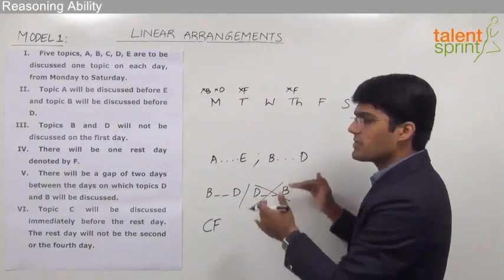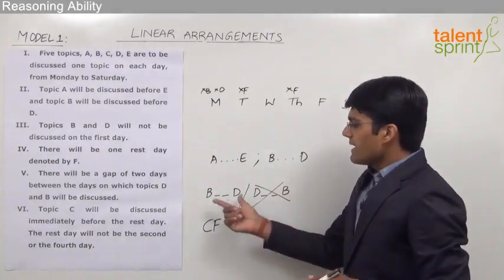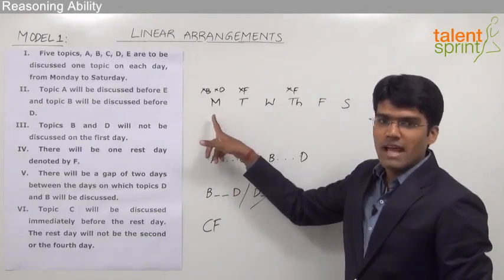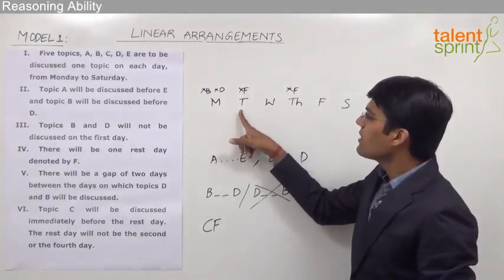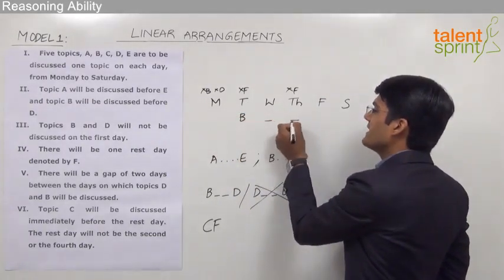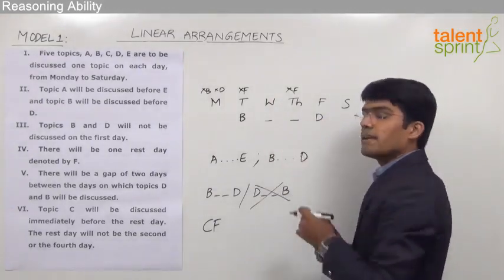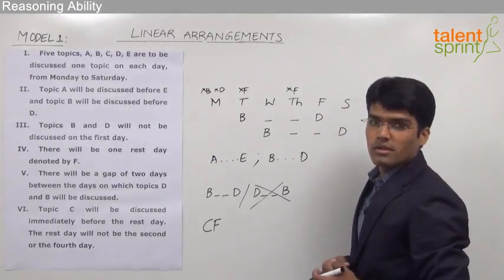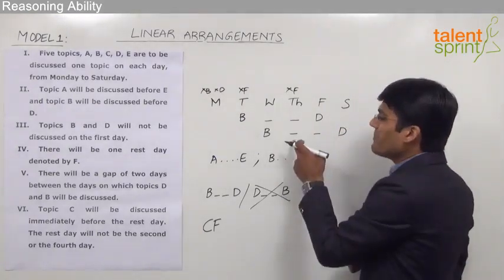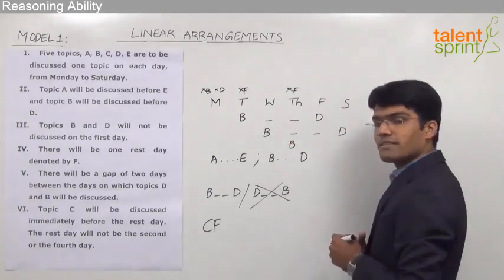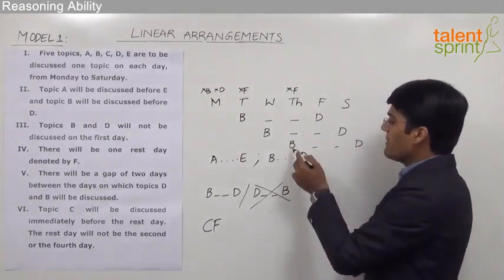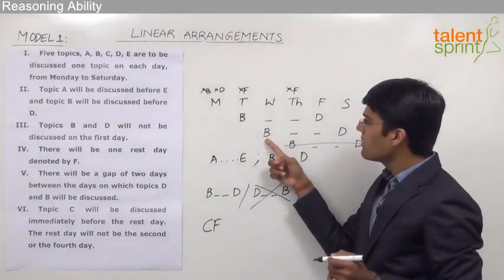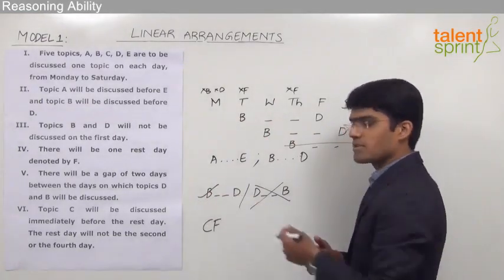Let us start solving. There should be a gap of two days between B and D, and B cannot come on Monday. If B comes on Tuesday, then D comes on Friday. If B comes on Wednesday, then D comes on Saturday. If B were placed on Thursday or later, D would fall outside the week. So the only two possible arrangements are: B on Tuesday with D on Friday, or B on Wednesday with D on Saturday.